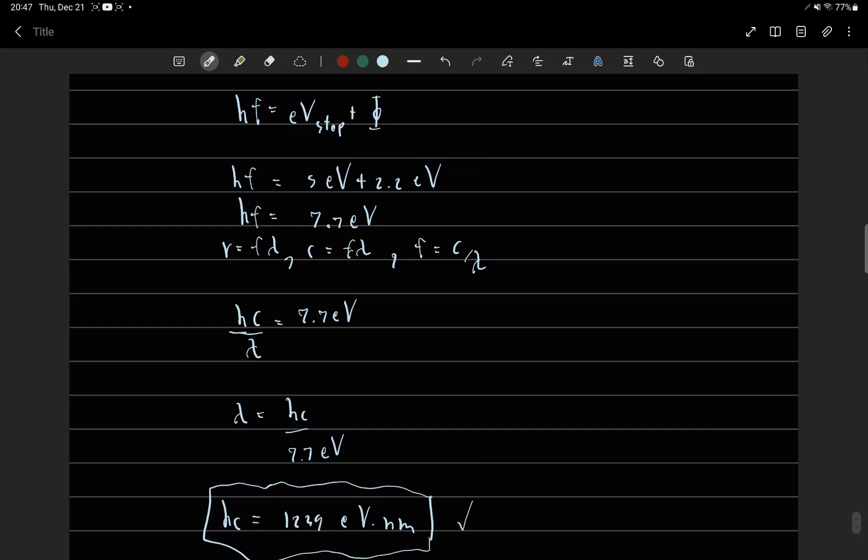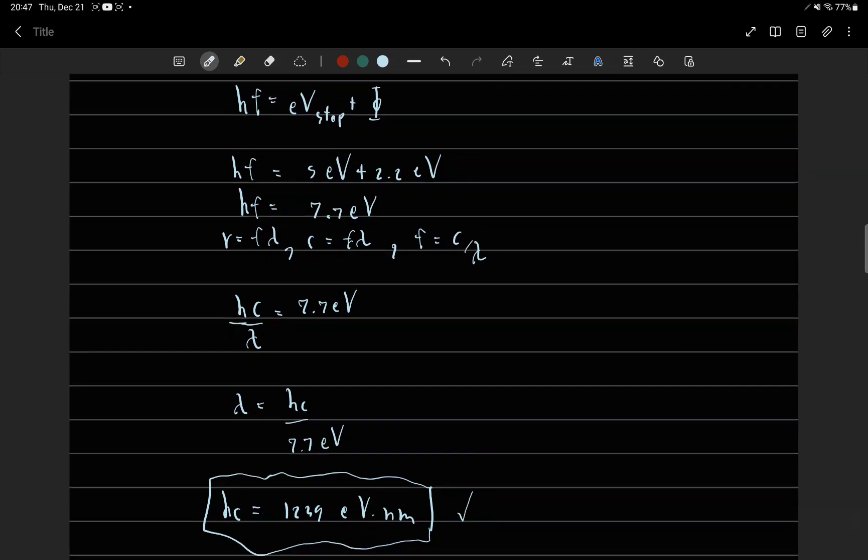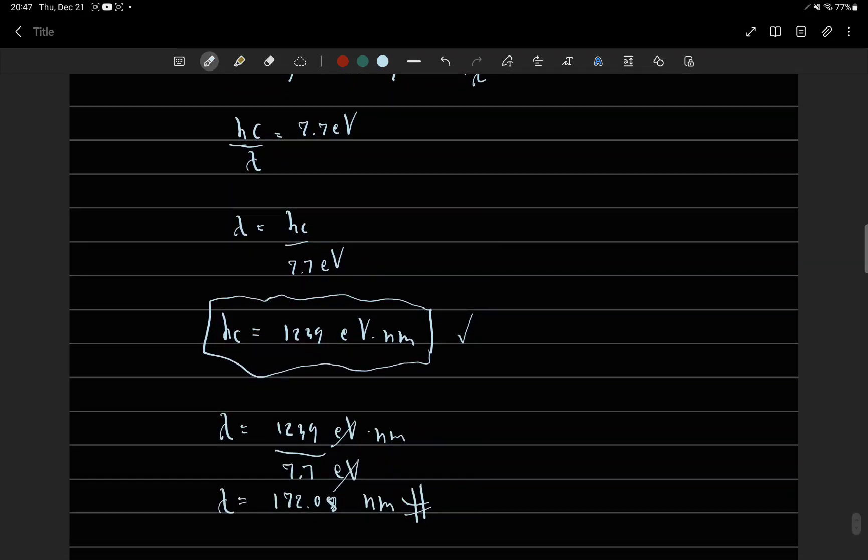For this problem, we need to know that HC equals 1239 electron volts nanometers. So lambda equals 172.08 nanometers.